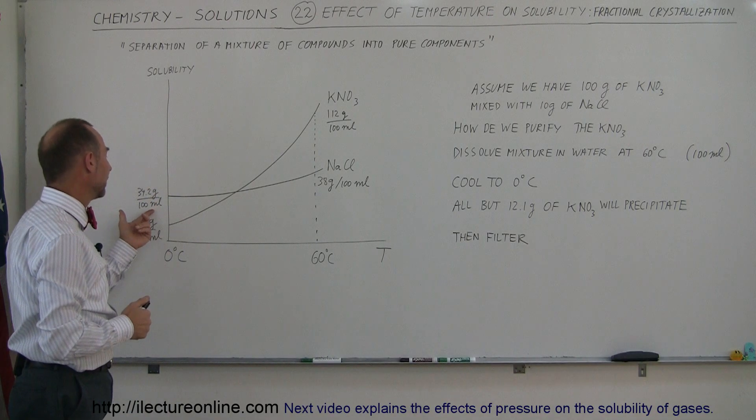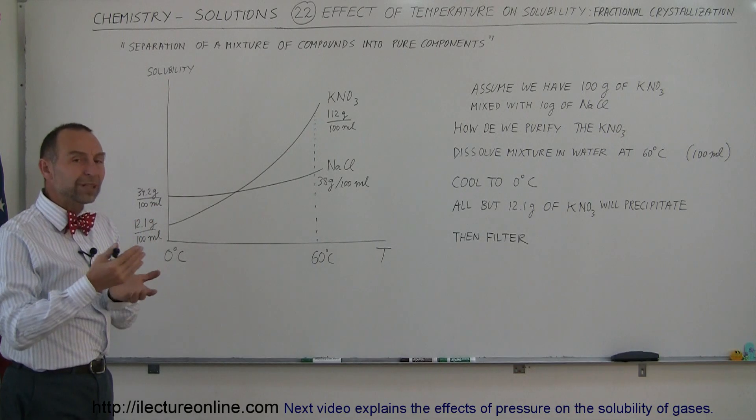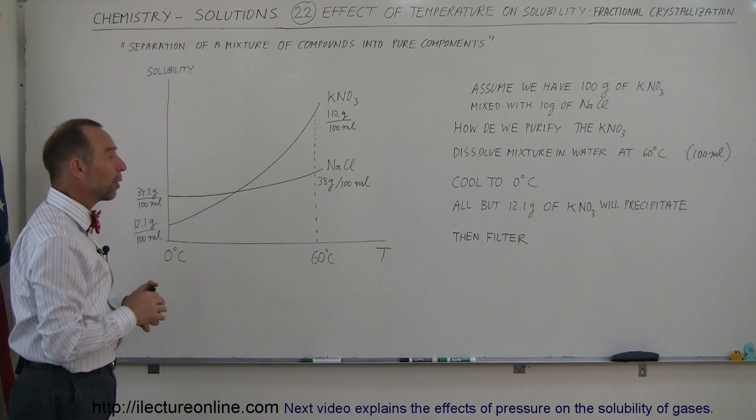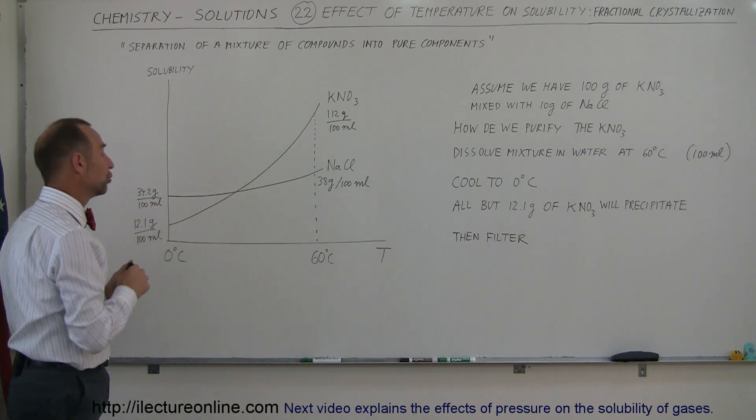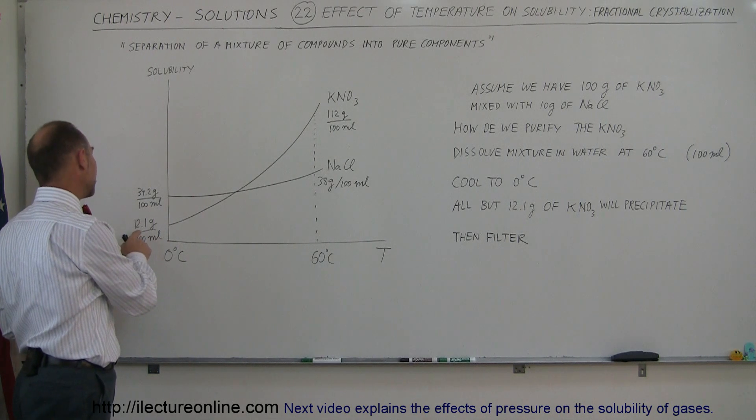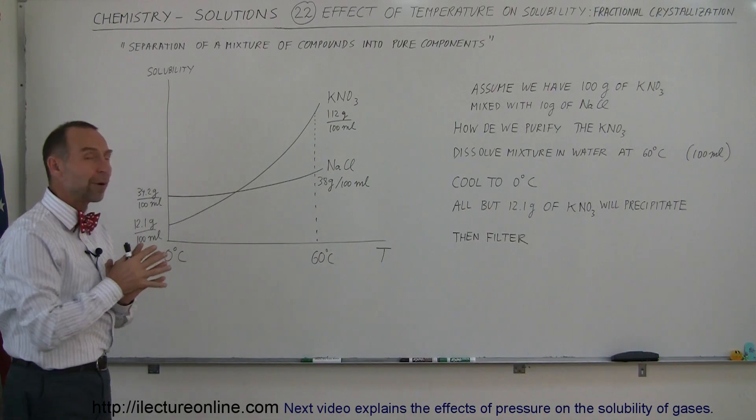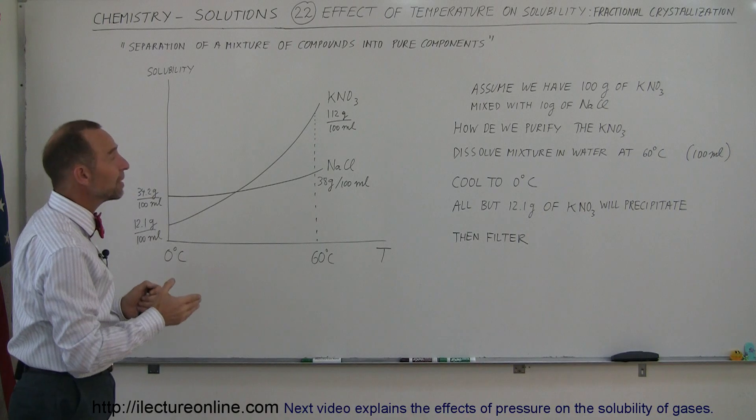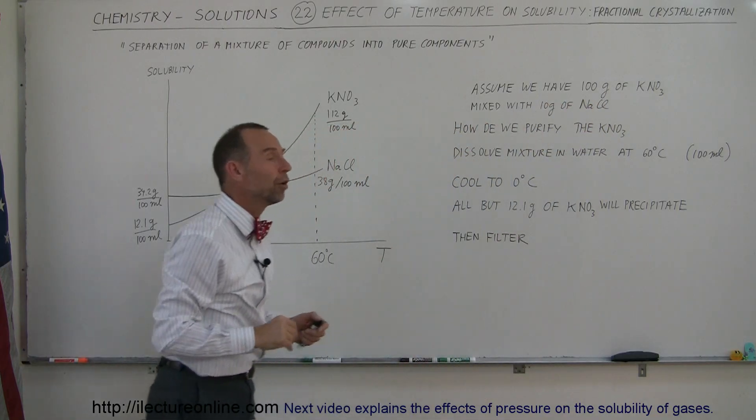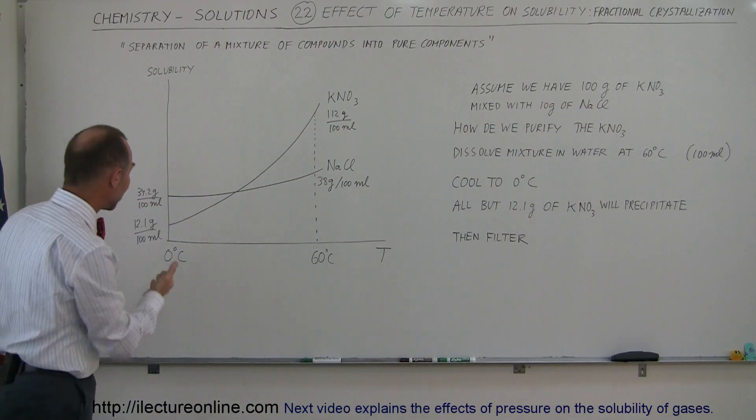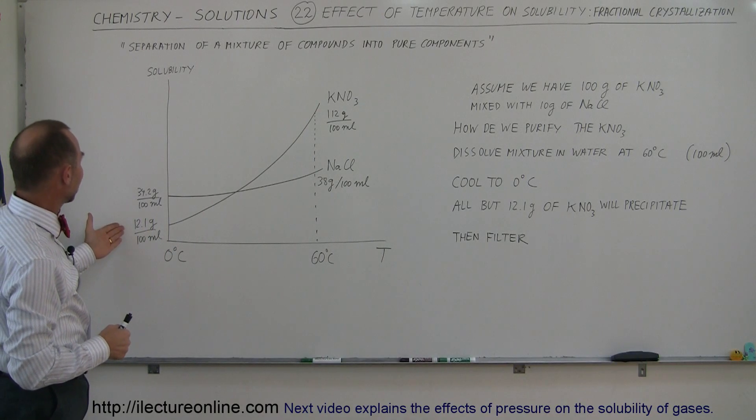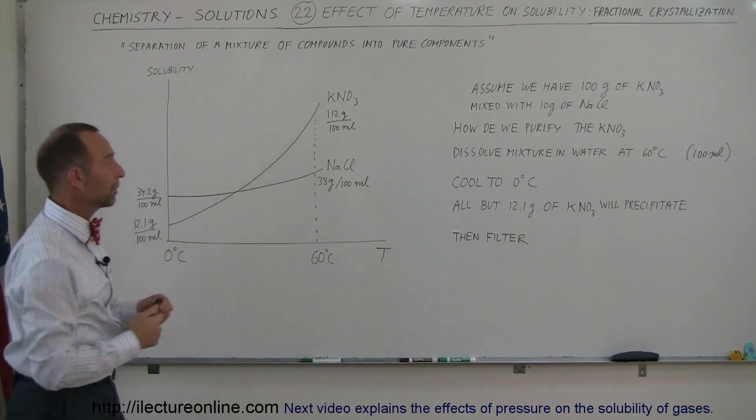Well, sodium chloride will still be in solution, will not precipitate out because even at zero degrees centigrade, that 100 milliliters of water can still hold in solution 34.2 grams of sodium chloride. However, the potassium nitrate can only hold 12.1 grams of potassium nitrate at zero degrees centigrade, which means from the 100 grams of potassium nitrate that we had in solution completely dissolved, all of it will precipitate except for 12.1 grams. So that means 87.9 grams will precipitate out.